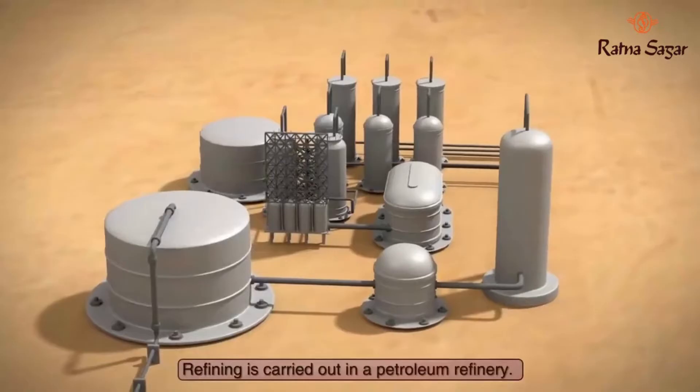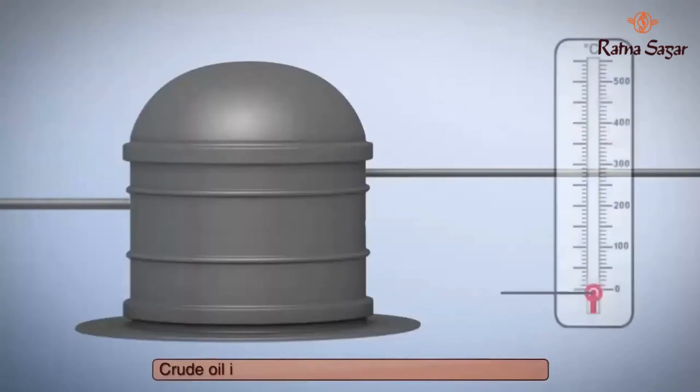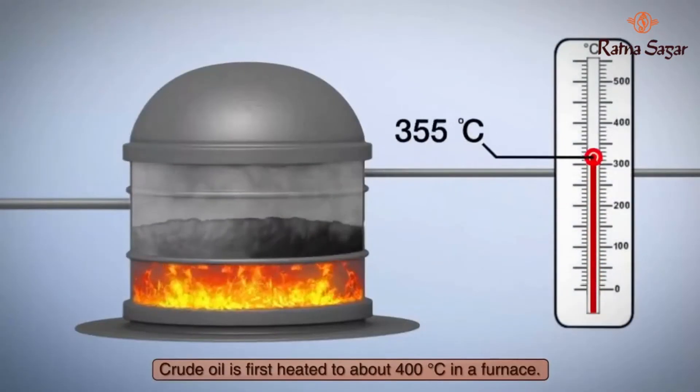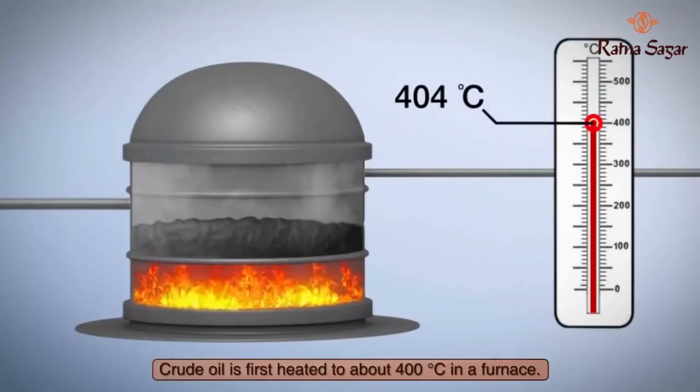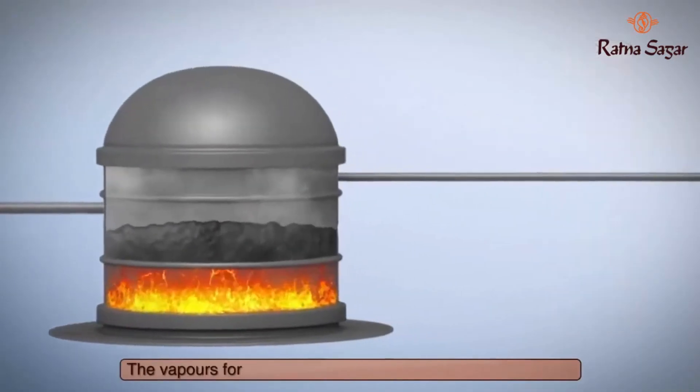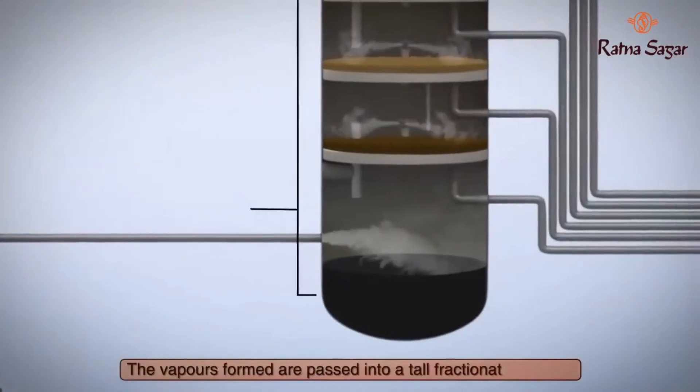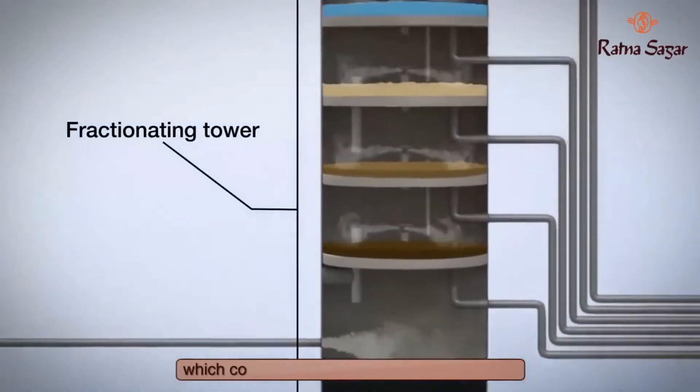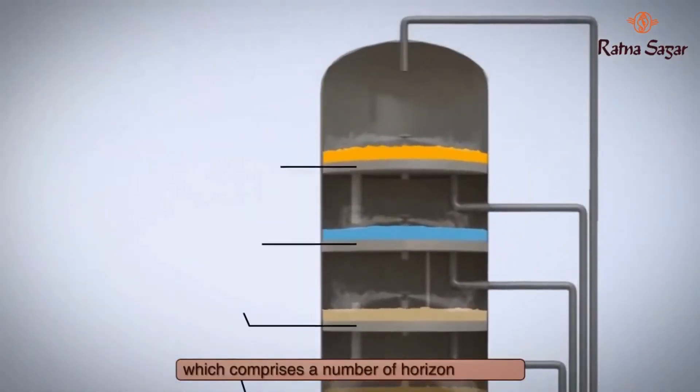Refining is carried out in a petroleum refinery. Crude oil is first heated to about 400 degrees Celsius in a furnace. The vapors formed are passed into a tall fractionating tower, which comprises a number of horizontal trays.